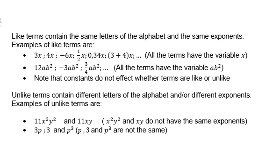Like terms contain the same letters of the alphabet and the same exponents. Examples of like terms are 3x, 4x, negative 6x, half x, 0.34x, even (3+4)x, because all the terms have the same variable x.